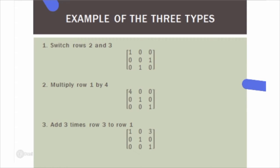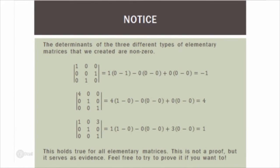For type 2 — multiplying row 1 by 4 — it's the multiplicative identity with the 1 in the first row changed to a 4, which multiplies everything in the first row by 4. For type 3 — adding 3 times row 3 to row 1 — you place a 3 in the third column of the first row of the multiplicative identity. Notice that the determinants of all three types of elementary matrices are non-zero. This holds true for all elementary matrices — you could prove it, and it will come up later.